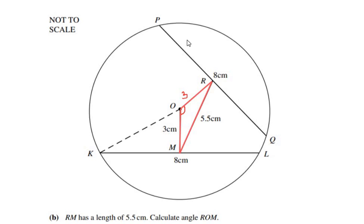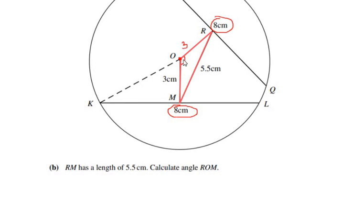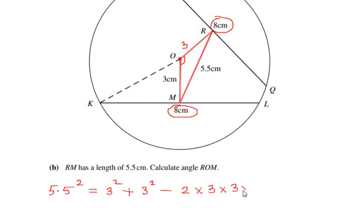KL and PQ are two chords of the same length, and if they have the same length they are equidistant from the center of the circle. Now we have all three sides of triangle ROM: OR = 3cm, OM = 3cm, RM = 5.5cm. We can use the cosine rule to find angle ROM: the side opposite to angle O is 5.5cm, so 5.5² = 3² + 3² − 2 × 3 × 3 × cos(ROM).